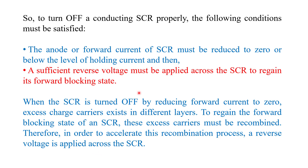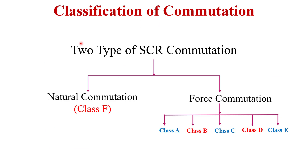There are basically two types of SCR commutation: natural commutation, also called Class F commutation, and forced commutation. Forced commutation is further divided into five classes: Class A, Class B, Class C, Class D, and Class E.